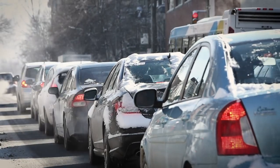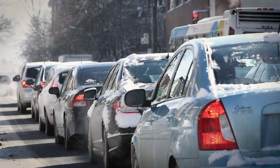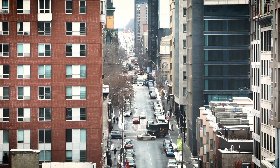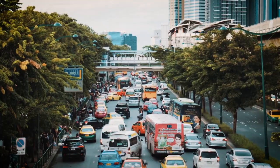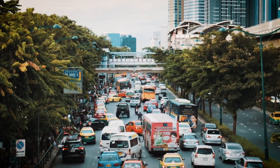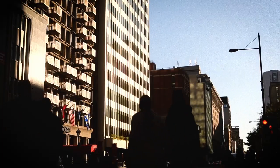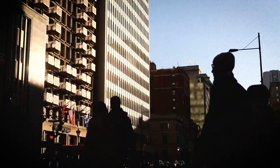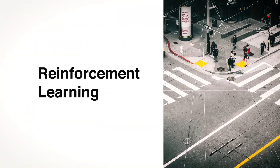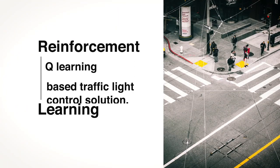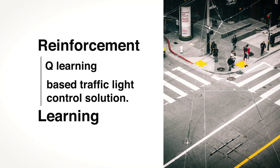We consider the following nightmare scenario of traffic control where there is a lack of coordination across intersections, where vehicles and pedestrians may interfere with each other. To address this issue, we've proposed a reinforcement learning, or Q-learning in short, based traffic light control solution.